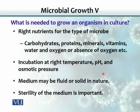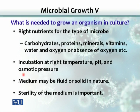What is needed to grow an organism in the lab? We have talked about all those physical and chemical requirements, and if we meet those in a lab situation, we are able to grow a microbe. The right nutrients for the type of microbe include carbohydrates, proteins, minerals, vitamins, water, and oxygen or no oxygen. Similarly, we would have to incubate the microbes at a certain temperature, and also provide the right pH and osmotic pressure.